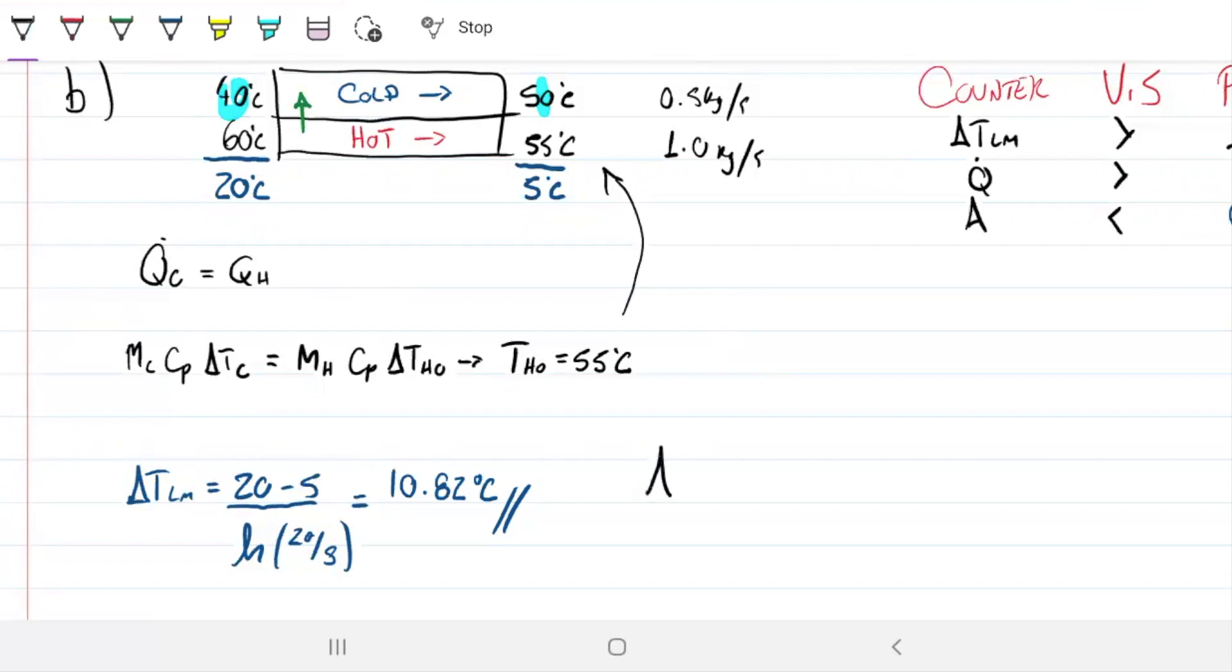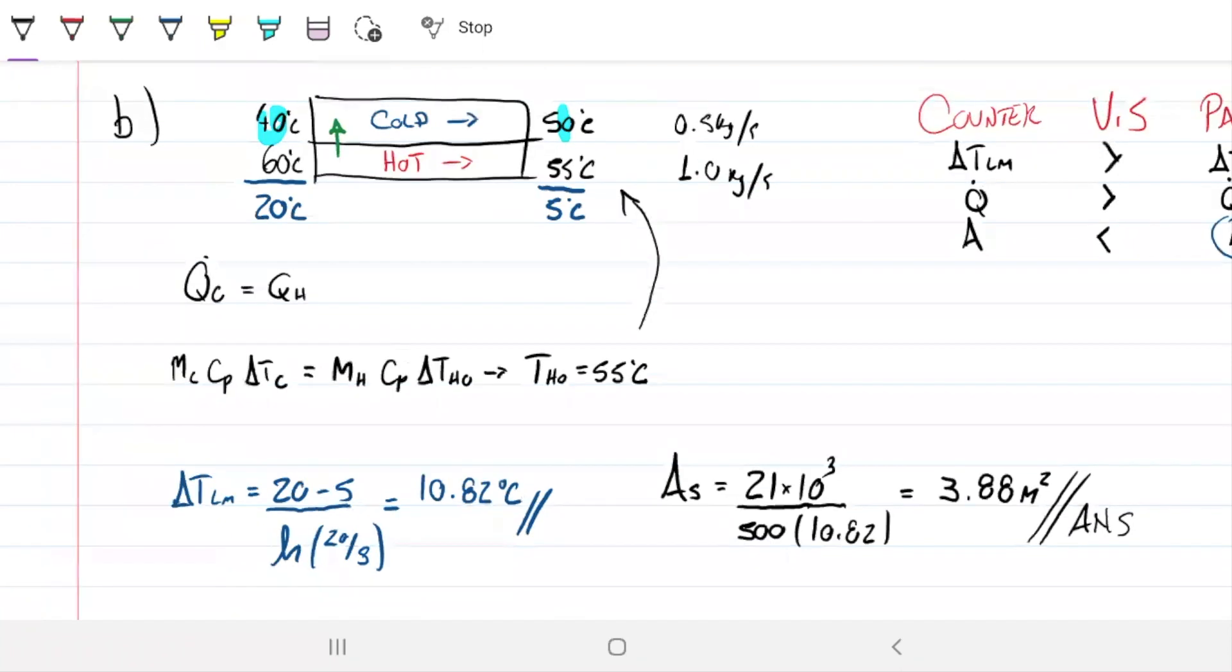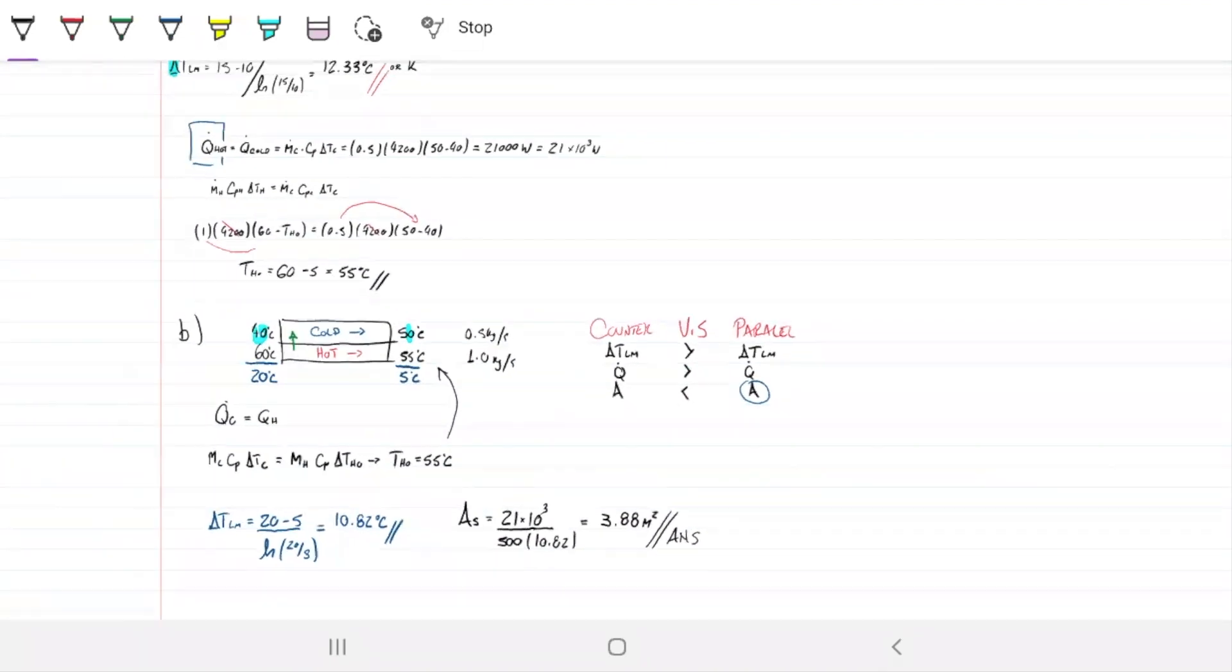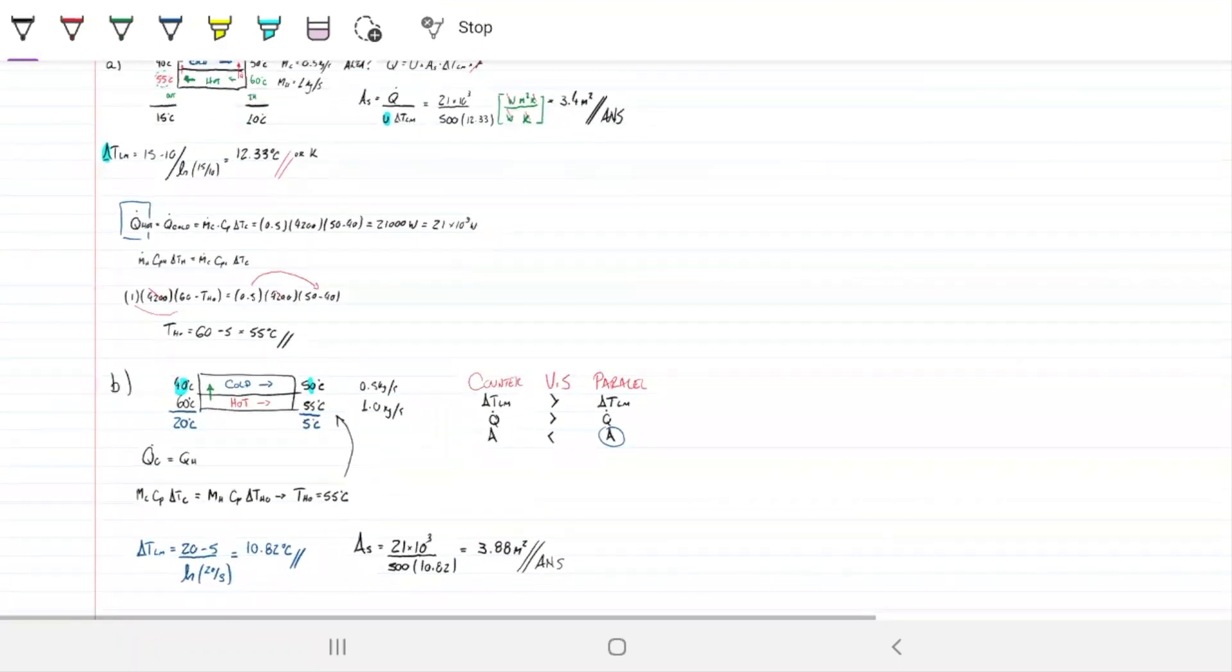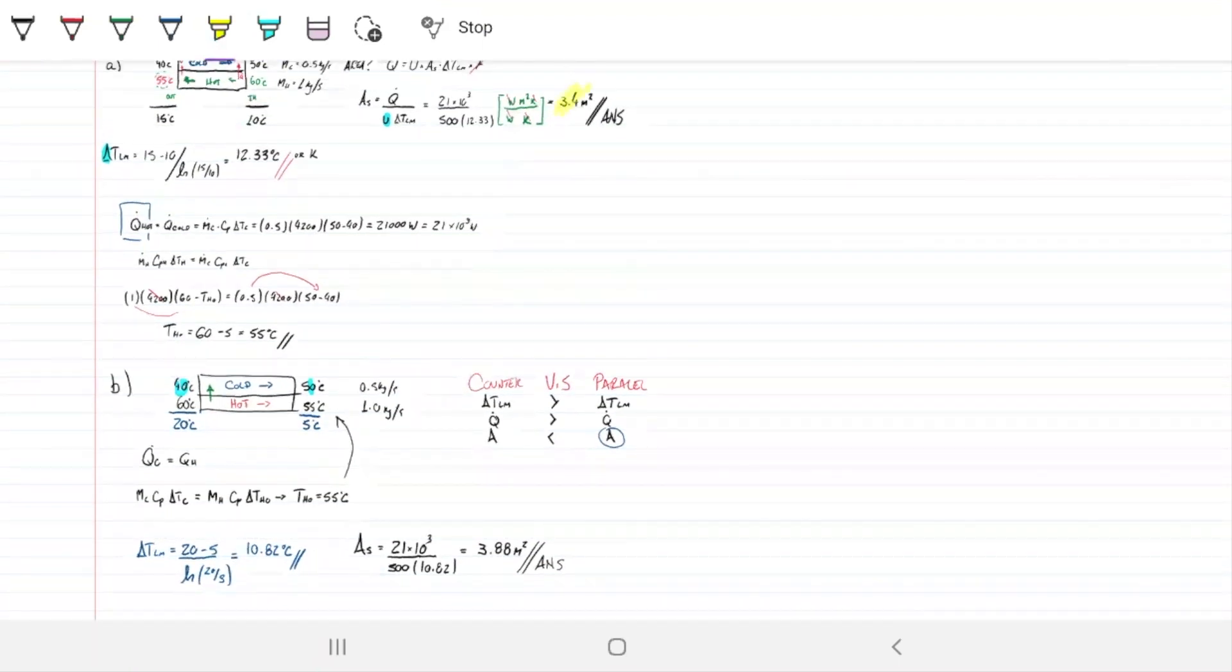Surface area was 21,000 watts divided by 500 of the overall heat transfer coefficient, then 10.82 over here. This turns out to be 3.88 meters squared. So indeed, more than 3.4, indeed 3.4 and 3.88. So under the same conditions, the parallel heat exchanger would have to be larger than the counter heat exchanger. Any questions?